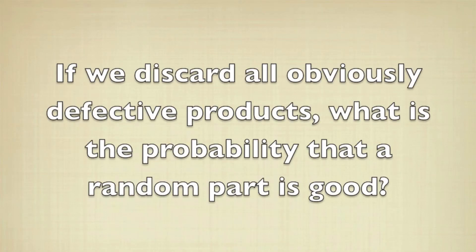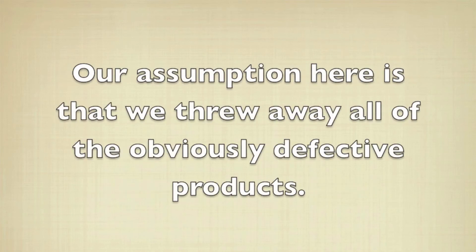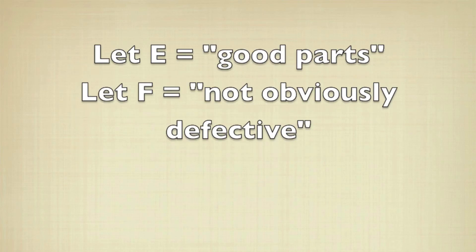If we have a machine that discards all the obviously defective products, what's the probability that a randomly selected product is good? This will be a conditional probability because we're making the assumption that we threw away all of the obviously defective products. So we're going to let E be the good parts, and F be the not obviously defective parts, and we want to find the probability of E, given F.